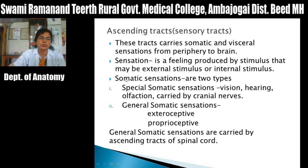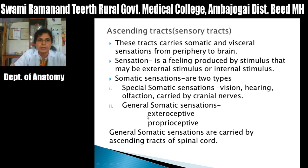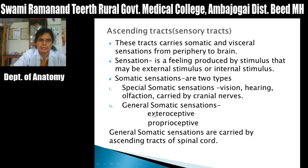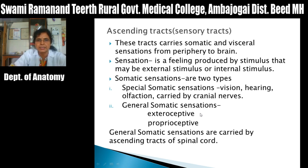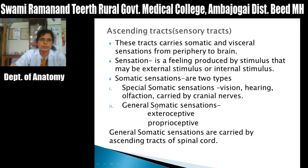Sensations are of two types: somatic and visceral. Somatic sensations include special somatic sensations such as vision, hearing, and olfaction, which are carried by cranial nerves. General somatic sensations are exteroceptive and proprioceptive. Exteroceptive sensations are generated by stimuli in the external environment — pain, touch, and temperature — with peripheral receptors including free nerve endings for pain, Krause's end bulbs for cold, and Meissner's corpuscles and Merkel's discs for touch, all situated in the skin.